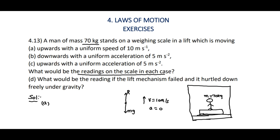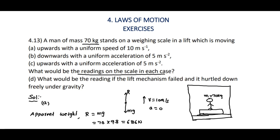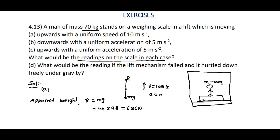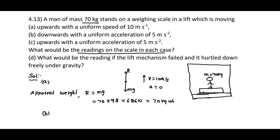Since the speed is uniform, acceleration is zero. The reading on the scale, or apparent weight, R = mg = 70 × 9.8 = 686 N. The weighing scale shows in terms of kilogram weight, so dividing by 9.8 we get 70 kg weight. That means the apparent weight is equal to the real weight of the person.